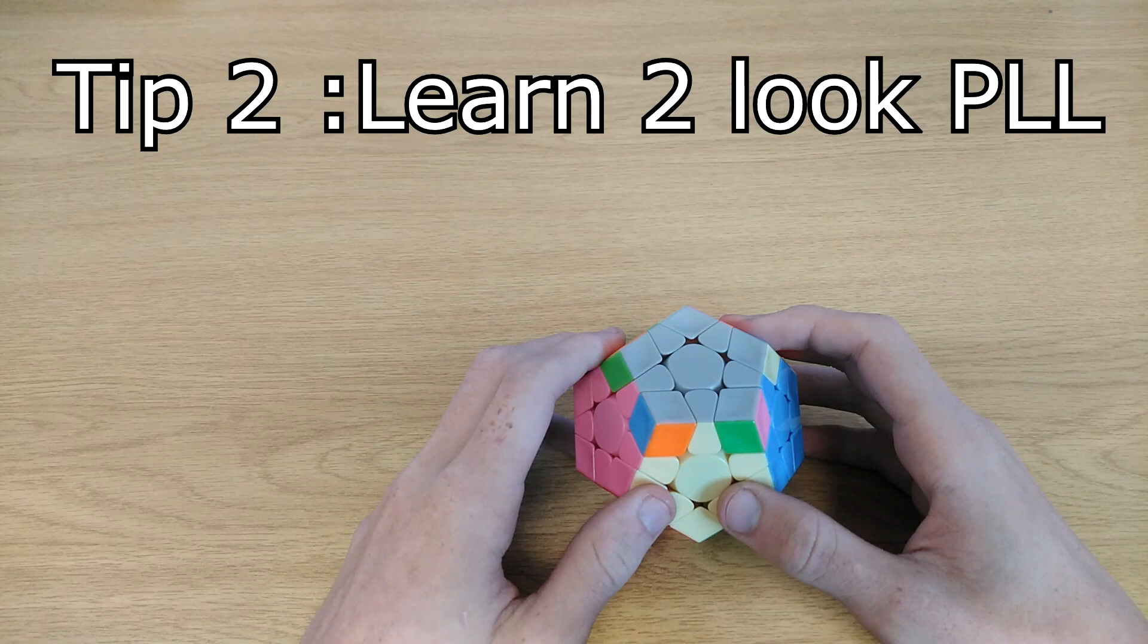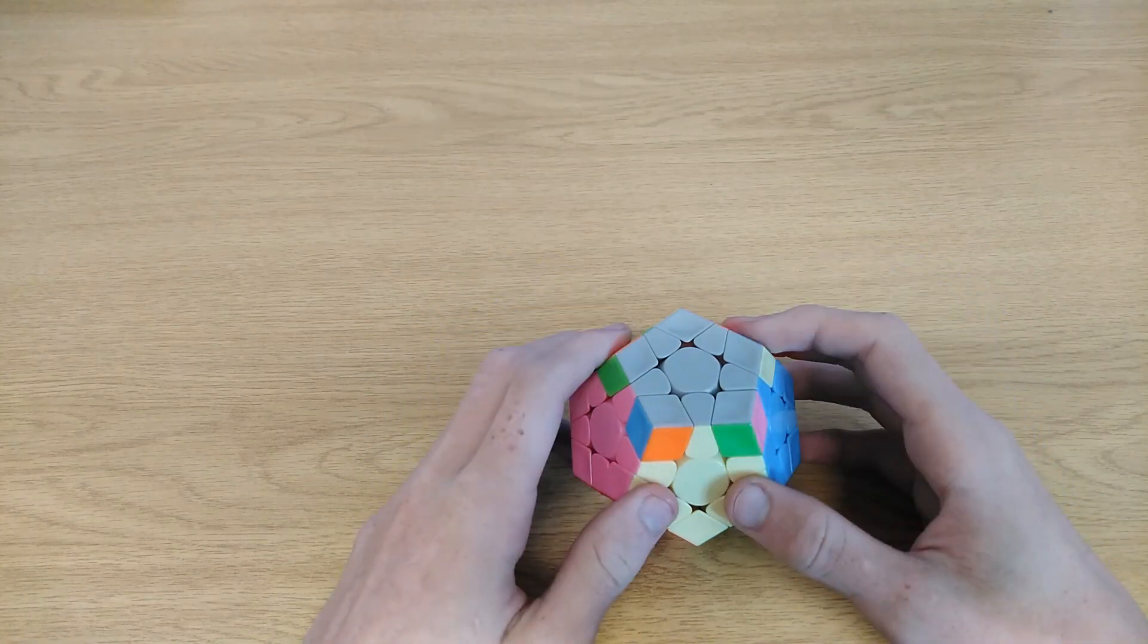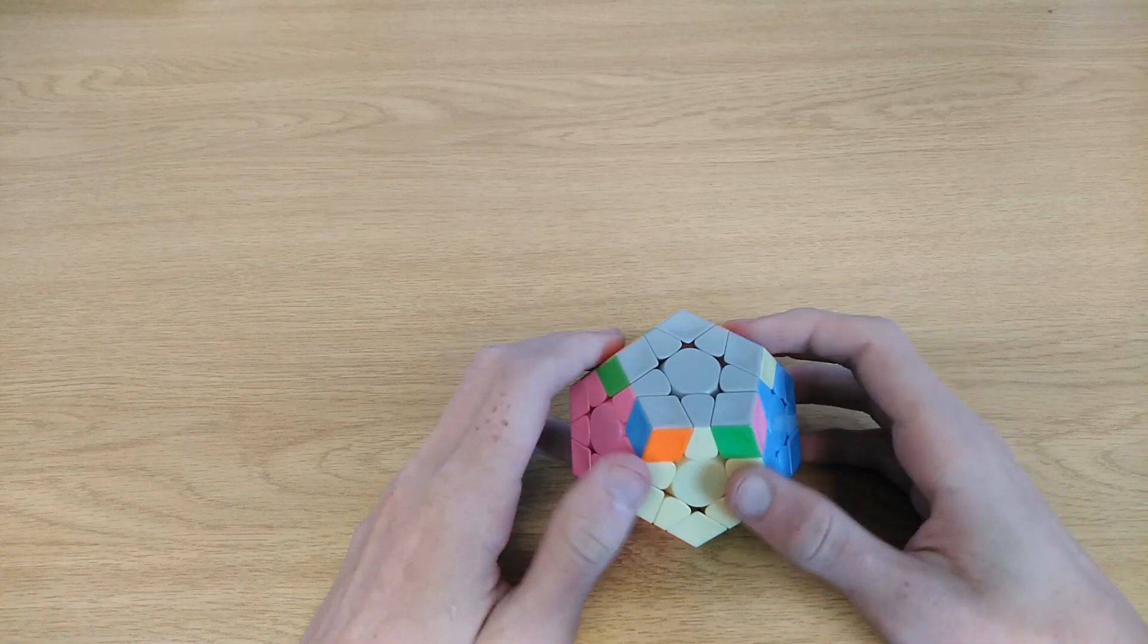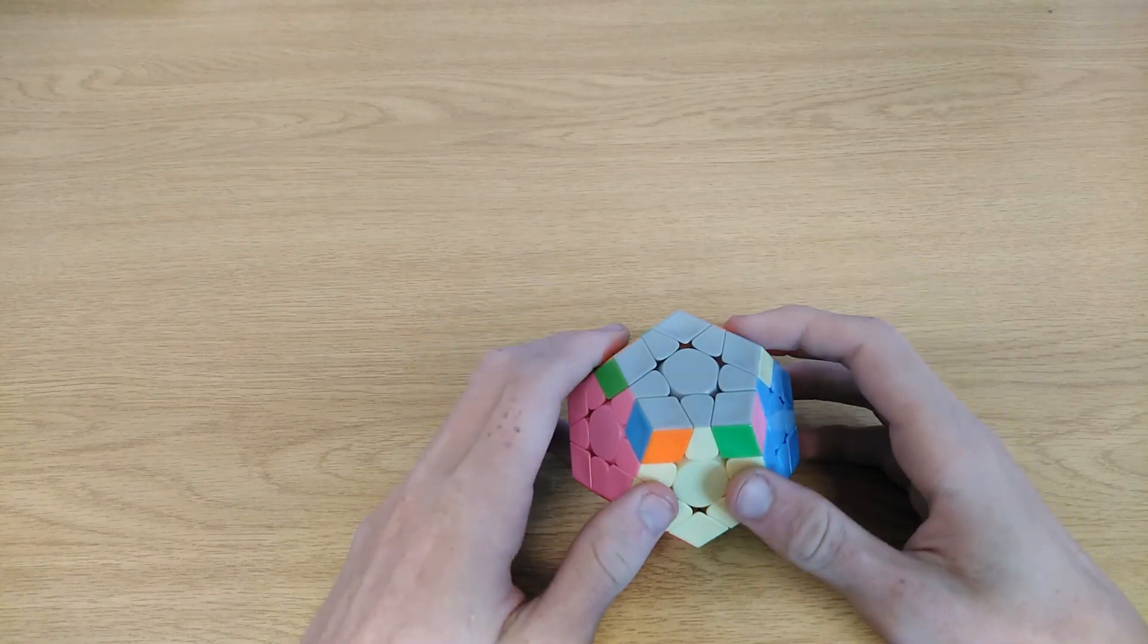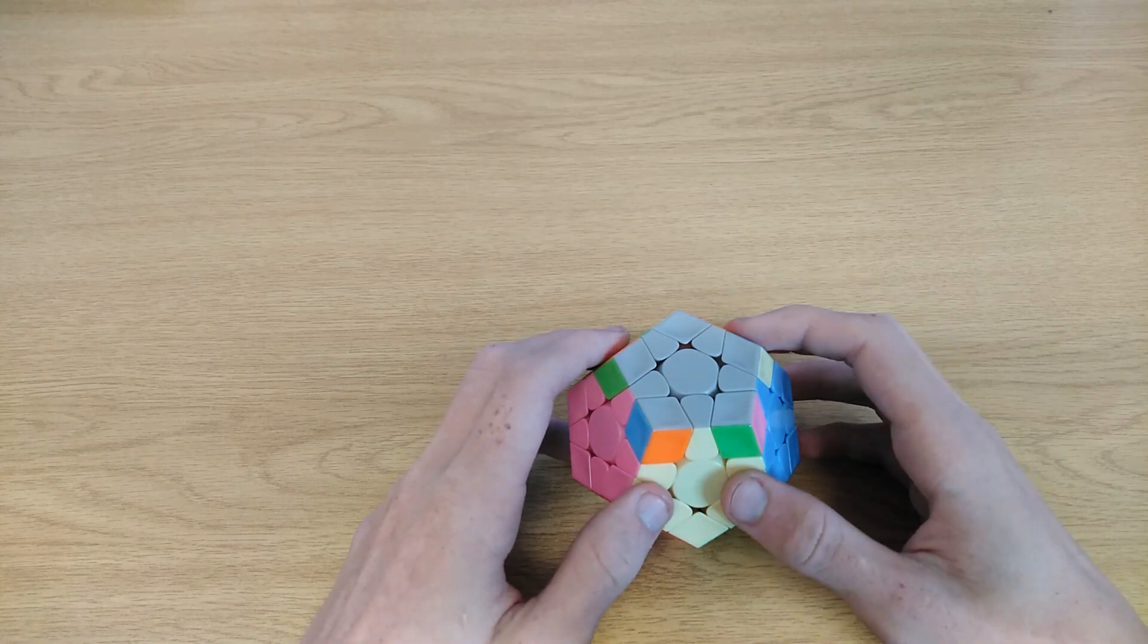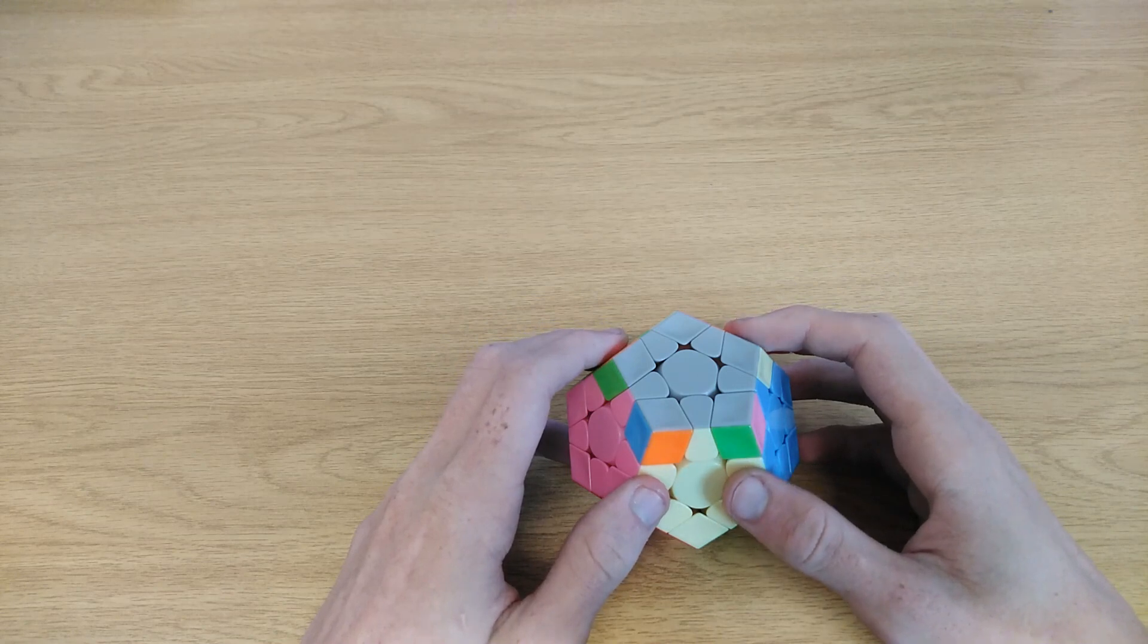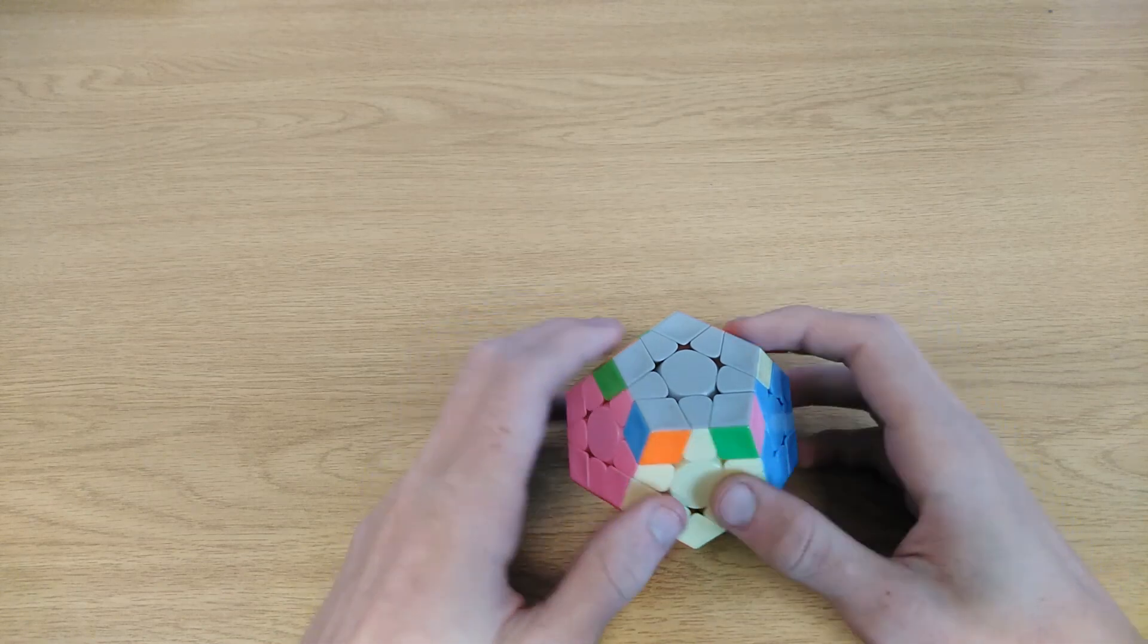Tip 2: Learn 2-look PLL. This is harder to learn than 2-look OLL, but it's still worth it. Getting your PLL down to 5 seconds will improve your times a lot. There's a total of 20 algorithms and they are quite difficult to learn. If you really don't want to learn everything, then you can still use commutators for the 5 corner cycles, which means you only have to learn 12 algorithms.